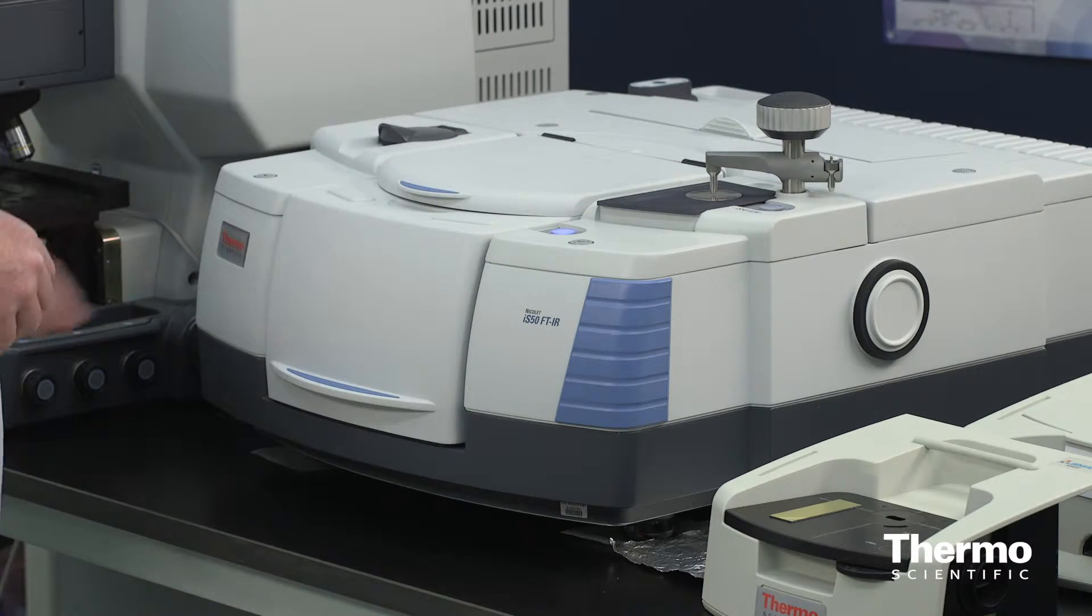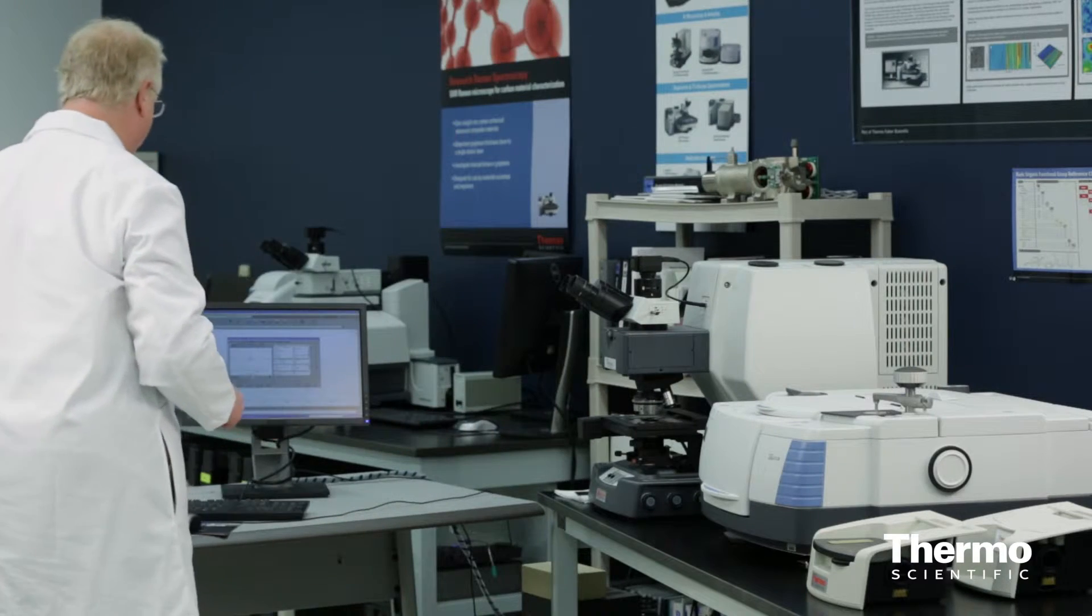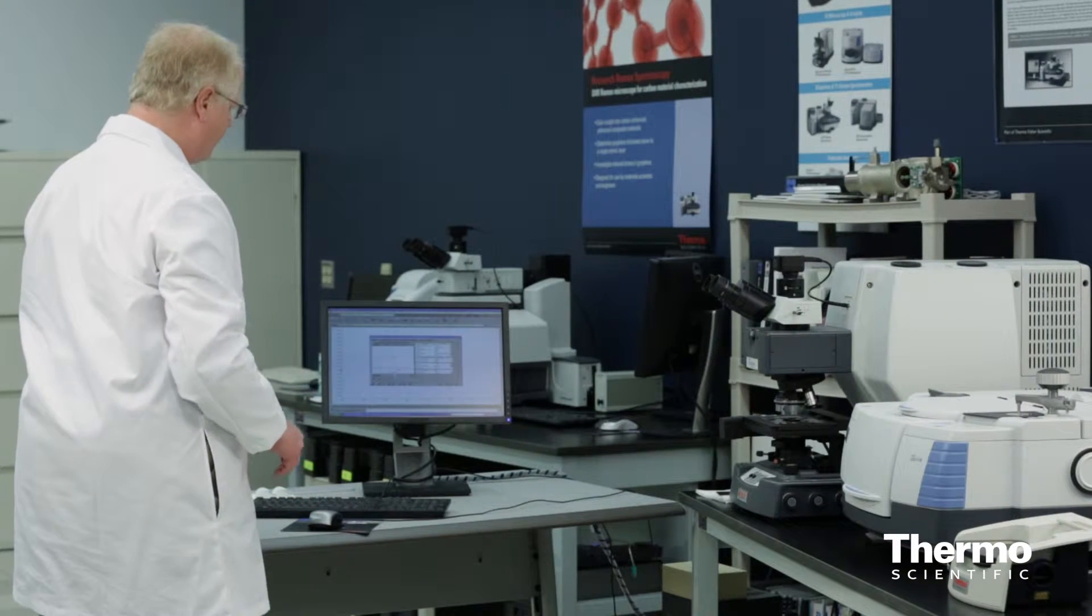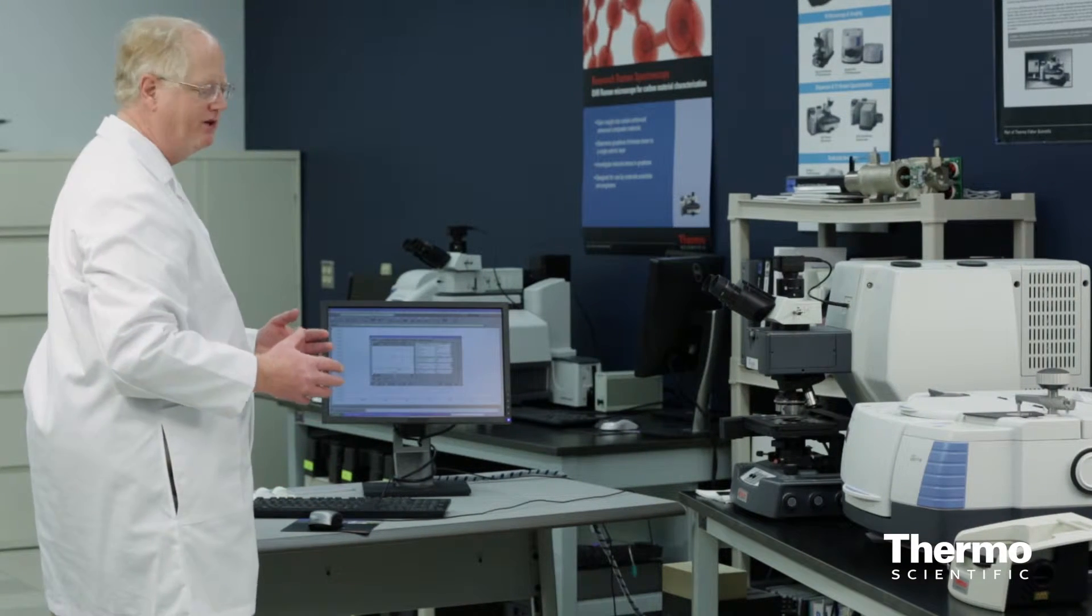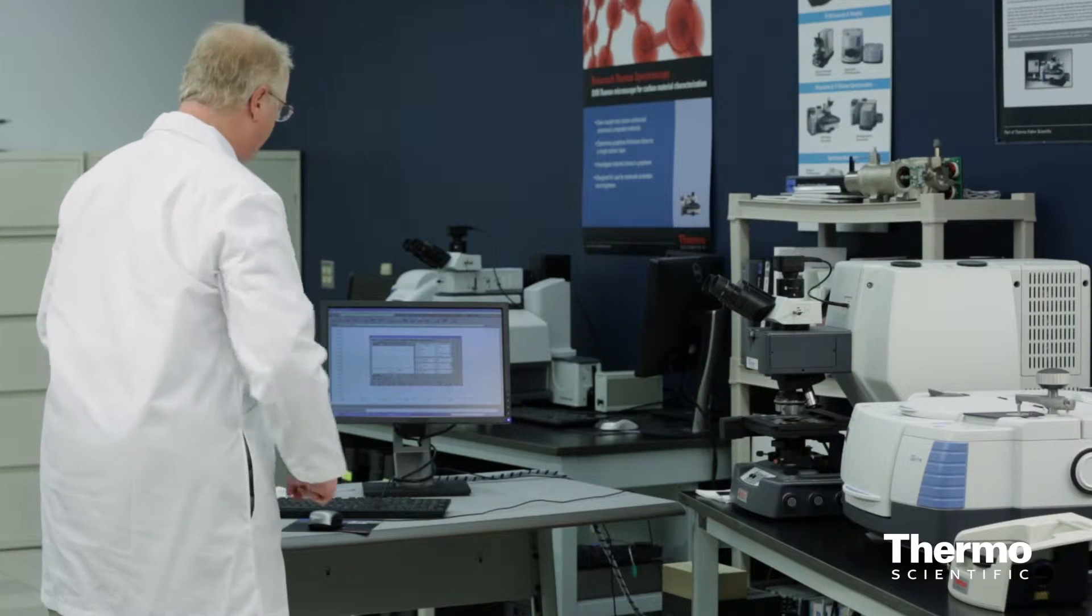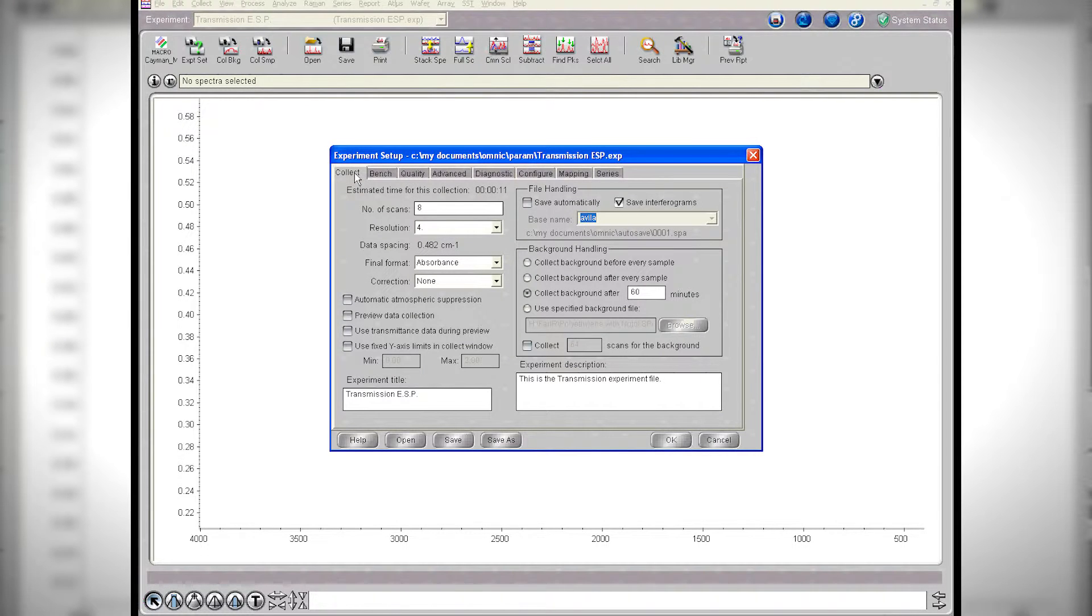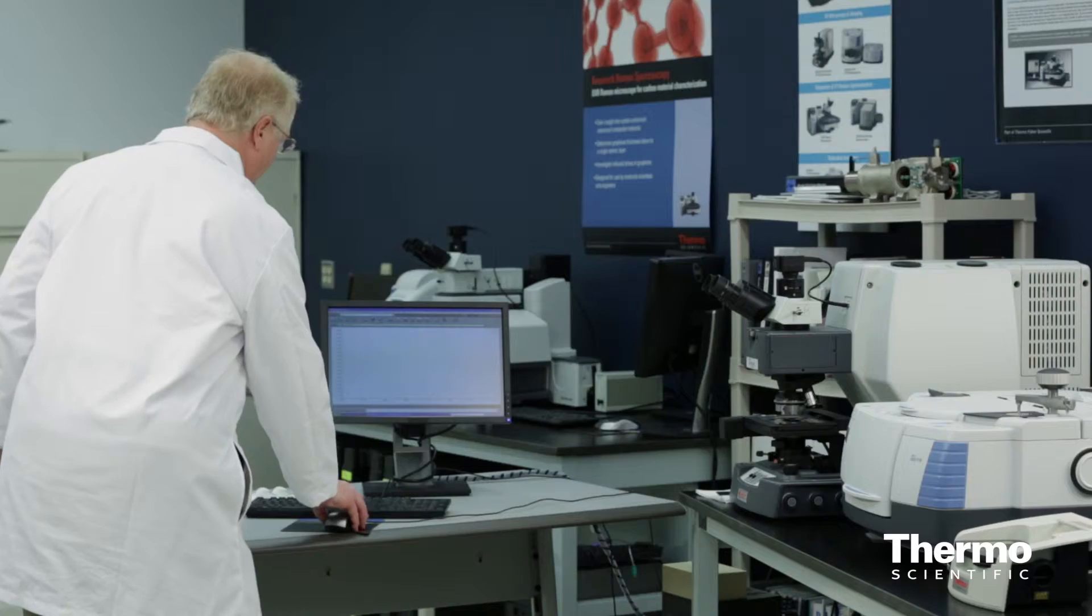Moving over to the computer, let's look at the settings. I've got this set up for a moderate resolution type of experiment for wave number resolution using the DTGS detector, the standard range. I'm going to collect eight scans—that'll be plenty to get me where I want to go.